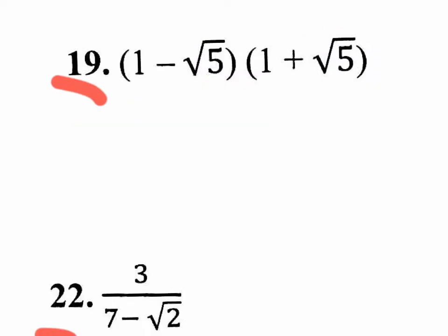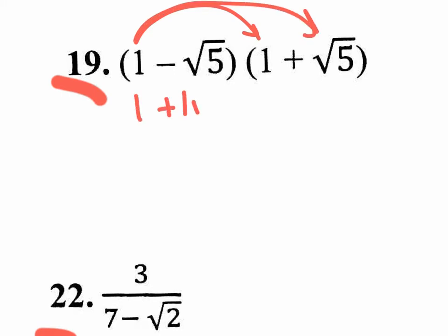Number 19 — it's really a binomial times a binomial with radicals in them, so you're going to have to distribute. 1 times 1 is 1. 1 times positive square root of 5 is positive 1 square root of 5. You don't even need to write the 1 in front — you could leave it as just a square root of 5.